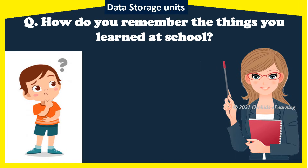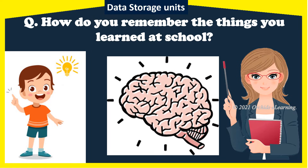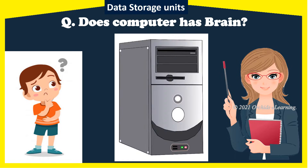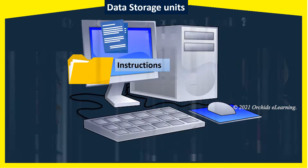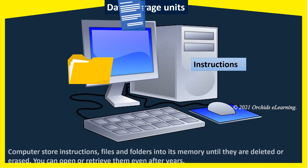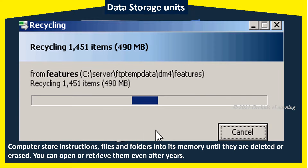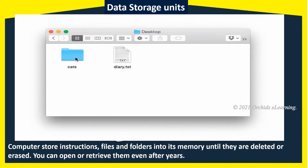Children, how do you remember the things you learned at school? We use our brains to remember things. Yes, we use our brains. But does a computer have a brain? Yes, the computer has a brain — CPU is the brain of a computer, because the computer stores all the data and information into the CPU. A computer stores instructions, files, and folders into its memory until they are deleted or erased. You can open or retrieve them even after years.